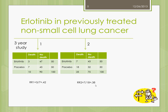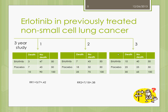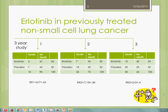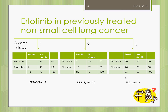Looking at the second year, the relative risk is 0.38. And at the end of the third year — the end of the study — it's 0.4. So the question becomes: what does a relative risk of 0.42 at the end of the first year really mean? Why is it different from the second-year value of 0.38 and the end-of-study value of 0.4? Why are these three numbers different?